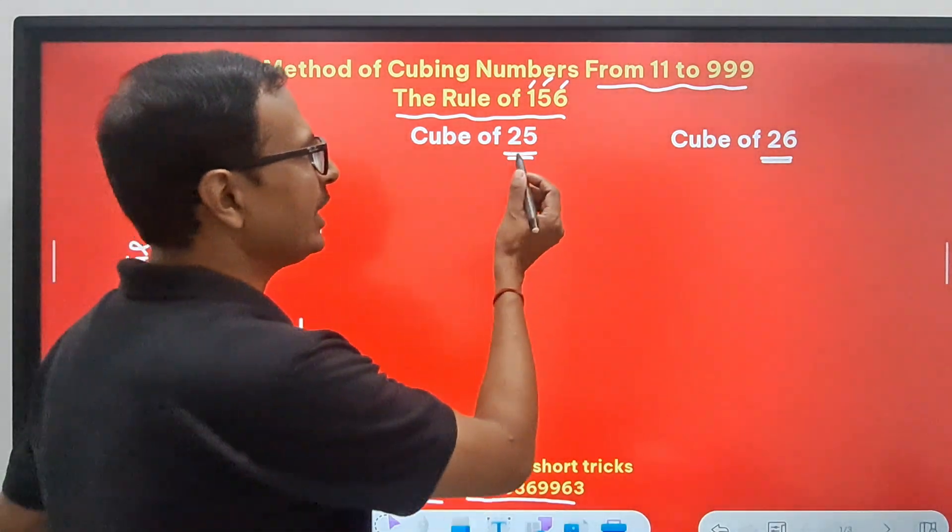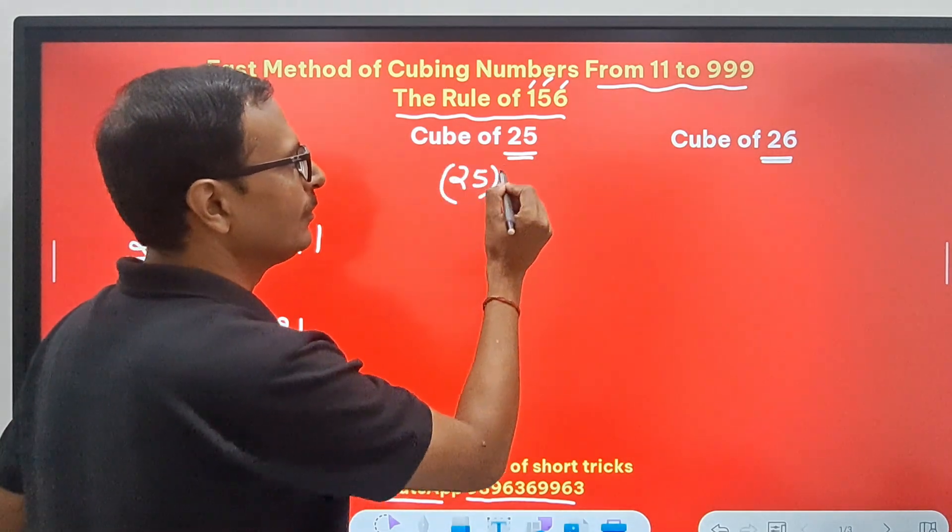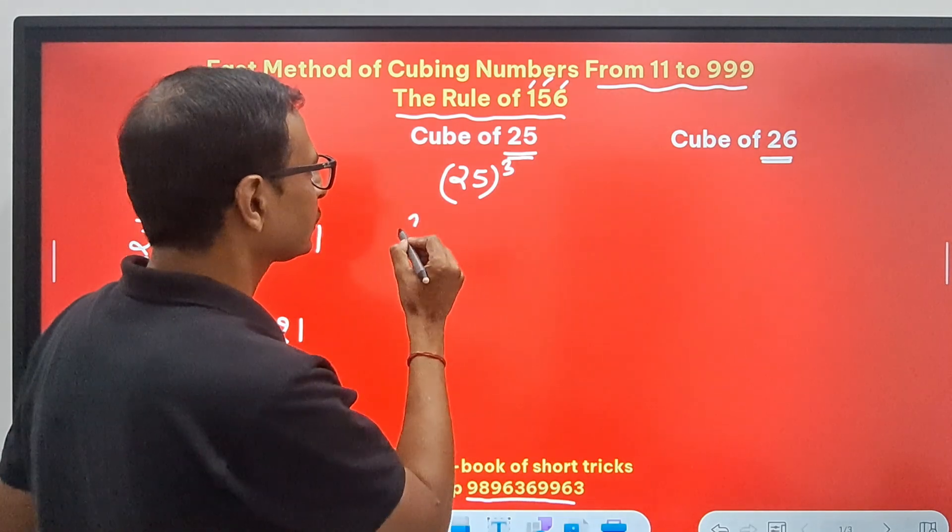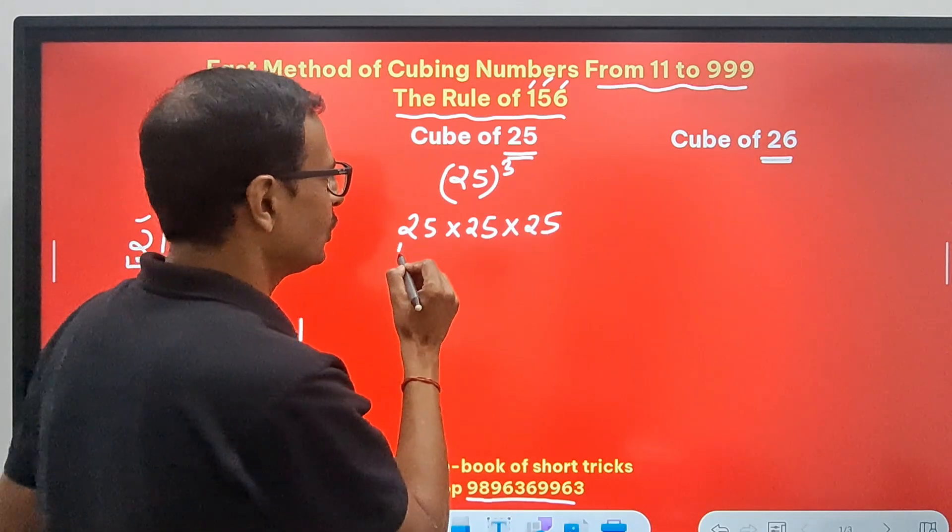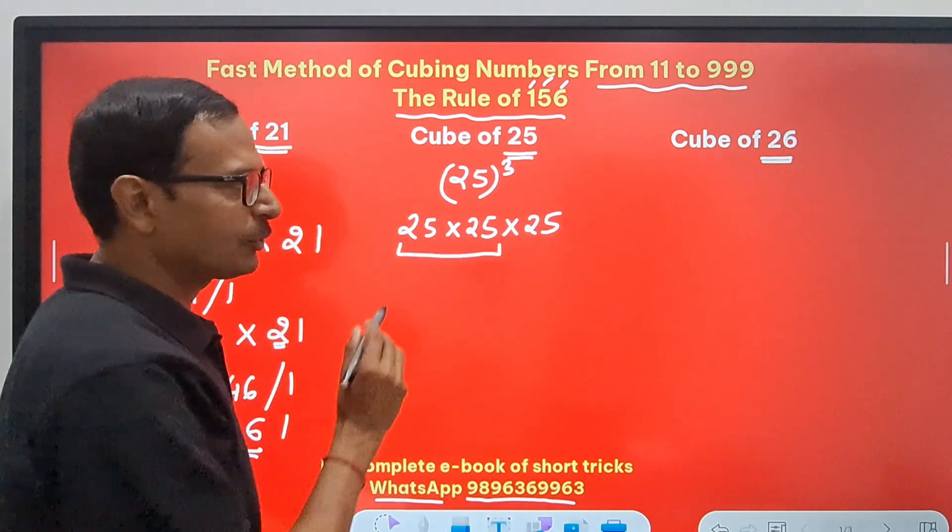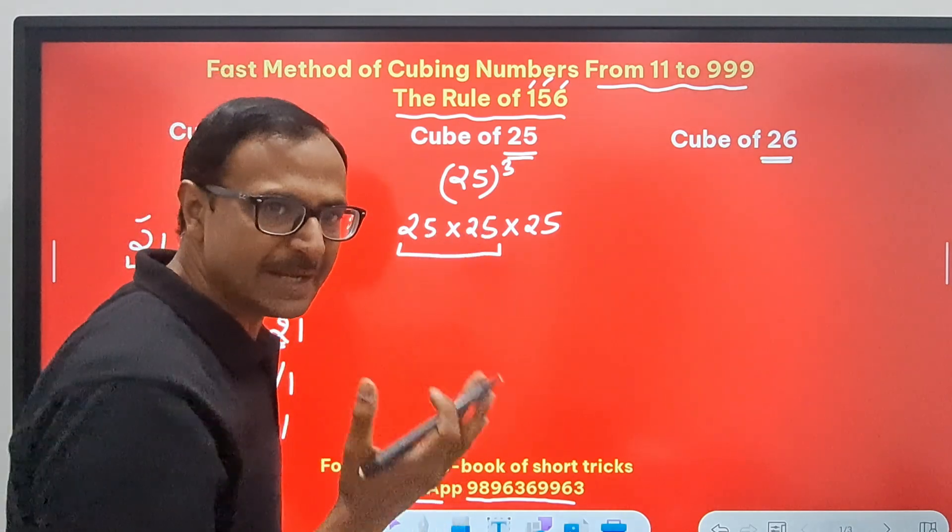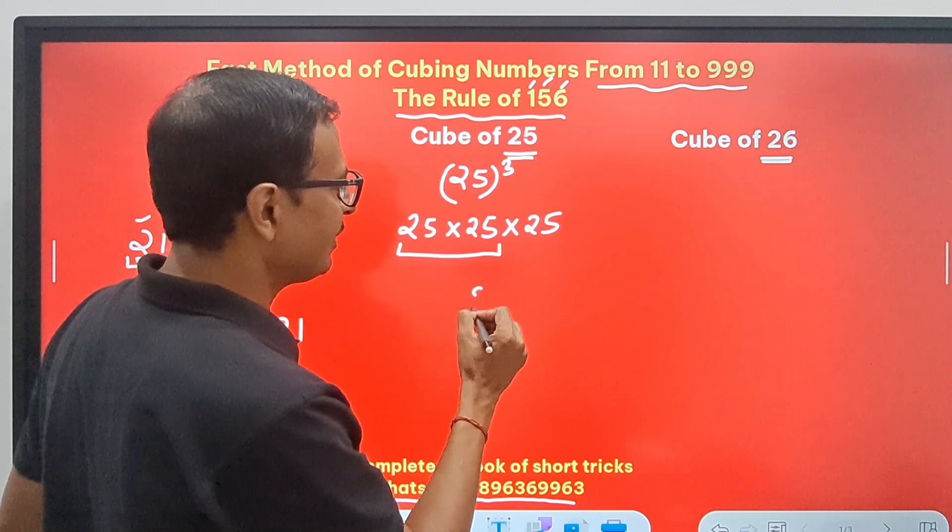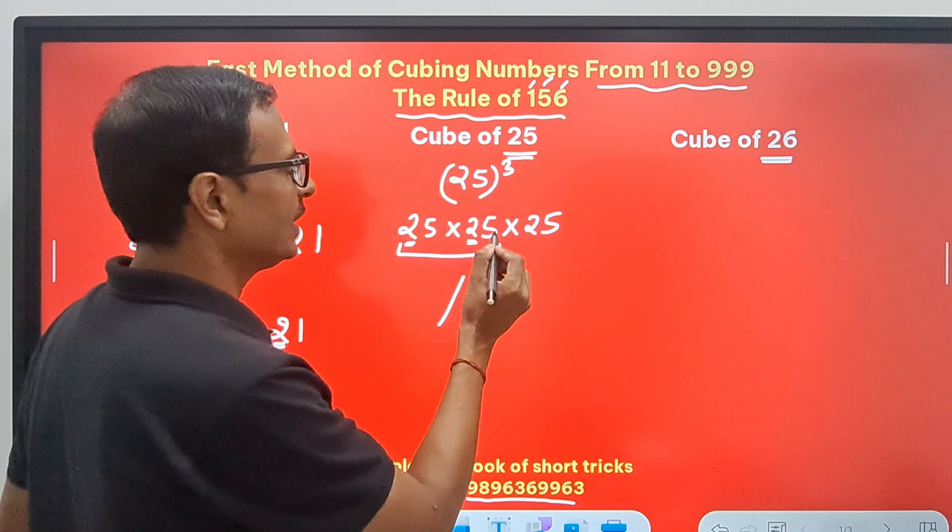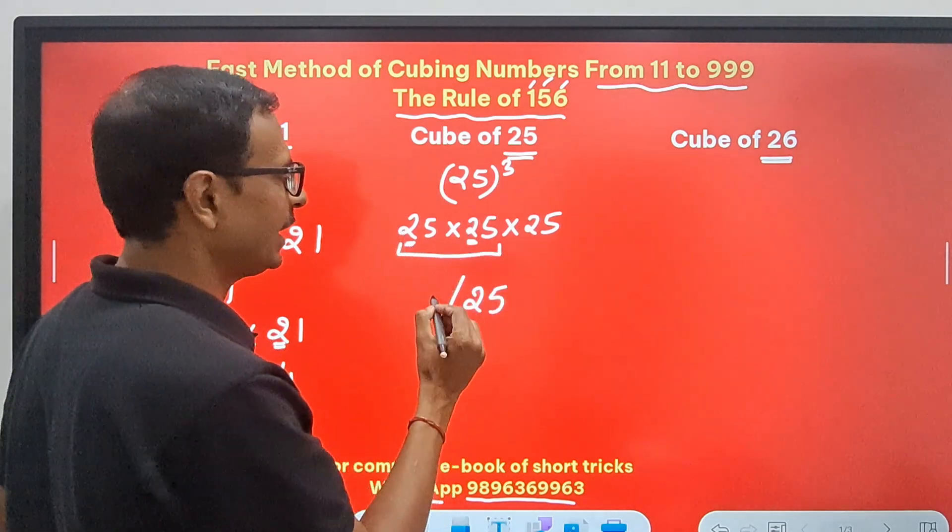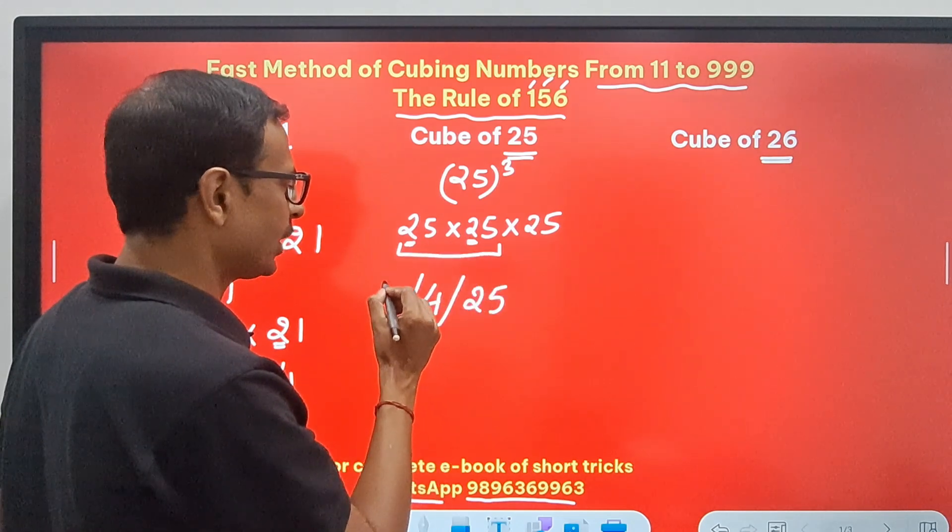Now come to cube of 25, the 5 part of the rule. When you have to do 25 cube, you just have to make one small adjustment. 25 times 25 times 25, right? This product of 25 and 25 is going to end in 1. So 5 times 5 is 25, right? I will write a 25 here. And then apart from these two 5s, we have 2 and 2 that makes it 4. And finally, 2 times 2 is 4 again.